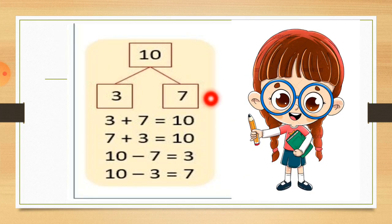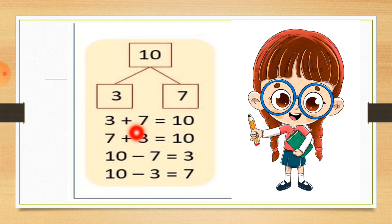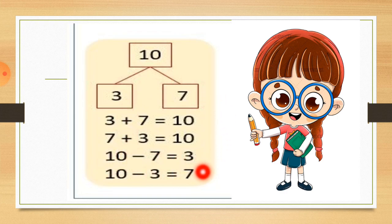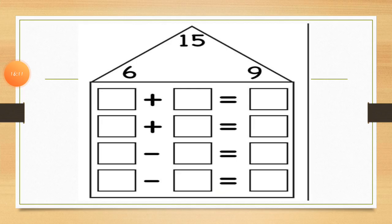Here is one more example: 3 plus 7 equals 10. Then 7 plus 3 equals 10 — you just swap the numbers. Now in the subtraction portion: 10 minus 7 equals 3, and 10 minus 3 equals 7. So in all 4 rows, the family number of 3, 7 and 10 is complete.